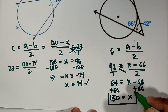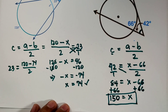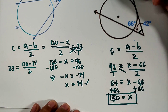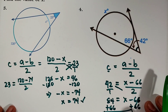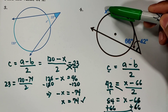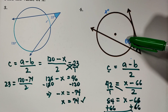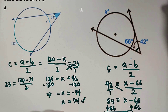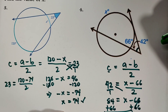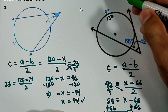Therefore, the value of X is 150. To verify: (150 − 66) / 2 = 84 / 2 = 42 degrees, which matches the given angle. So 150 is correct.